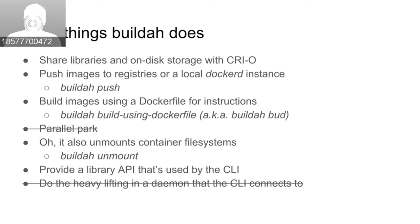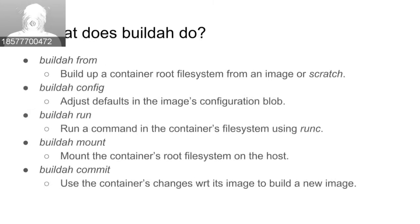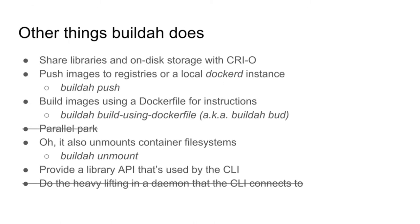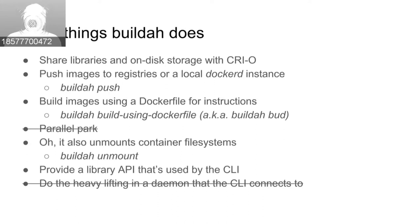The Buildah command line is closely modeled after Dockerfile instructions, and it can also process Dockerfiles using the OpenShift image builder library. The behavior is a bit different — you don't get multiple layers or layer caching — but it produces a perfectly workable image. Buildah itself is primarily a library used through its API, and that's where we're trying to integrate it into OpenShift.